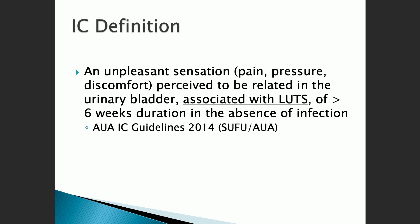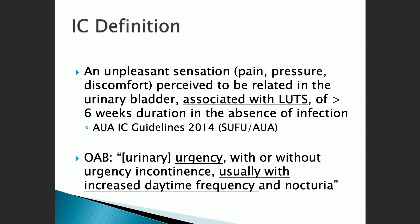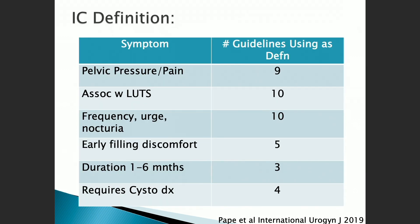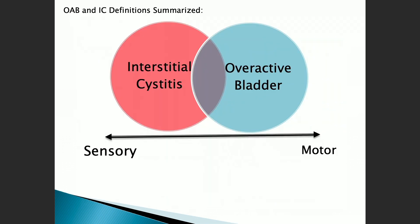The interstitial cystitis definition, from the AUA interstitial cystitis guidelines 2014, reads: 'an unpleasant sensation — pain, pressure, discomfort — perceived to be related to the urinary bladder, associated with lower urinary tract symptoms of greater than six weeks duration.' Putting those side by side, they're actually quite similar. A 2019 paper reviewed definitions from 10 different published guidelines and found commonalities: pelvic pressure and pain, associated lower urinary tract symptoms, and frequency — with urge noted in all 10.